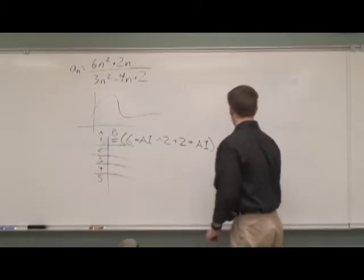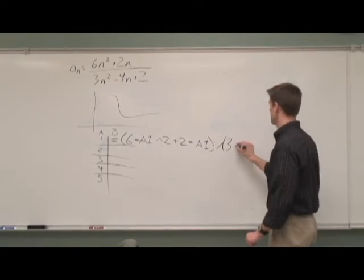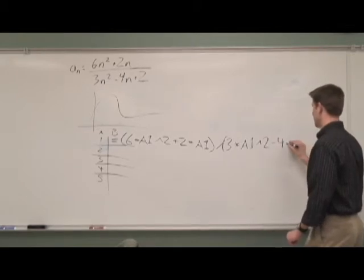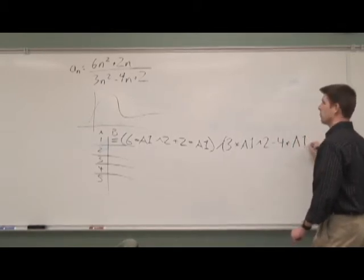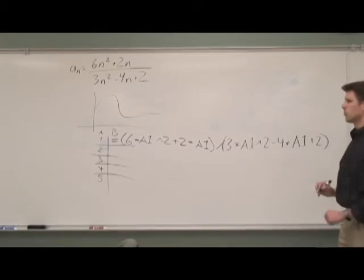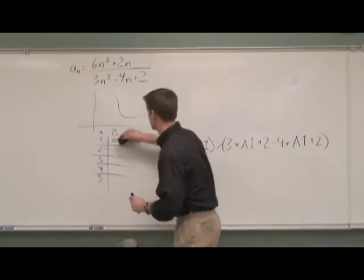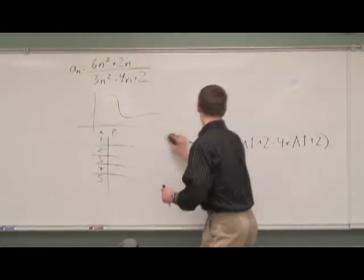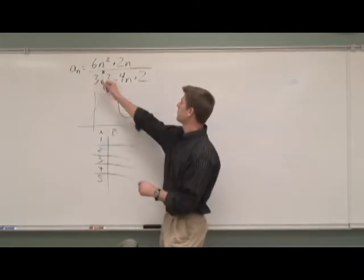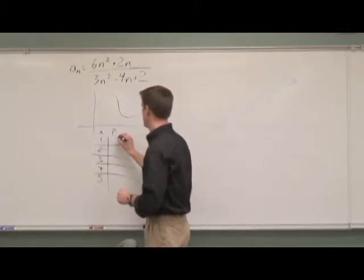plus 2 star A1 divided by 3 star A1 squared minus 4 star A1 plus 2 close parentheses. You're going to press enter on that, it will compute it, and incidentally this whole thing will disappear. And in its place you will get, let's see if we plugged in a 1 here we get 8 on the top and 1 on the bottom which would be 8.